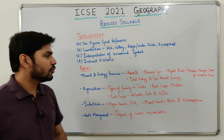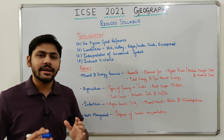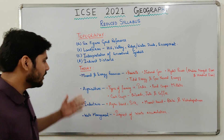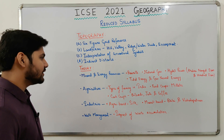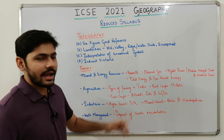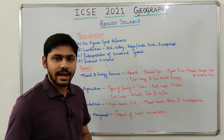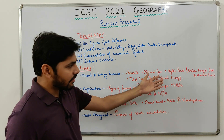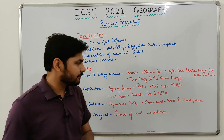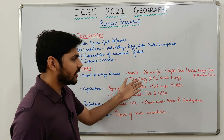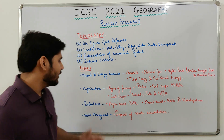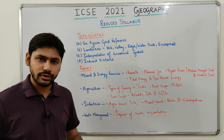Now we move on to the theory portion. In the theory portion, reductions have been made in four chapters. First, mineral and energy resources: bauxite has been removed, natural gas has been removed, hydel power including Bhakra Nangal Dam and Hirakud Dam has been removed, and tidal energy and geothermal energy have been removed.